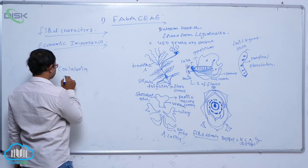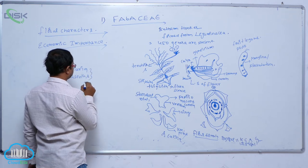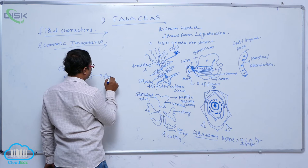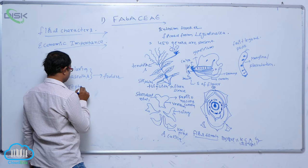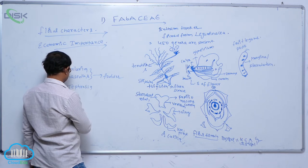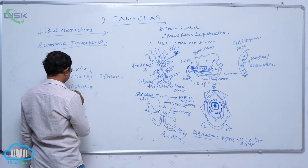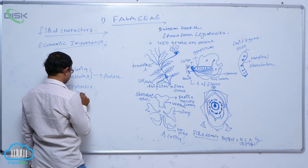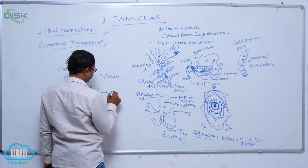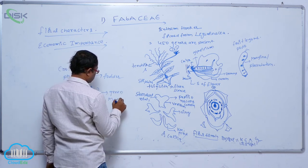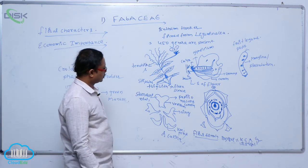Tephrosia and Sesbania are used as fodder and green manure respectively. So that is the economical importance of the Fabaceae family.